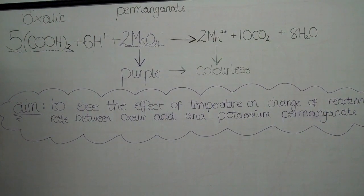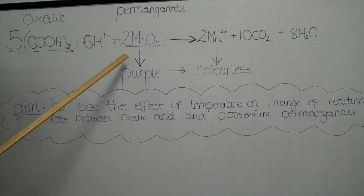The aim of the experiment was to see the effect of temperature on the change of reaction rate between oxalic acid and potassium permanganate.